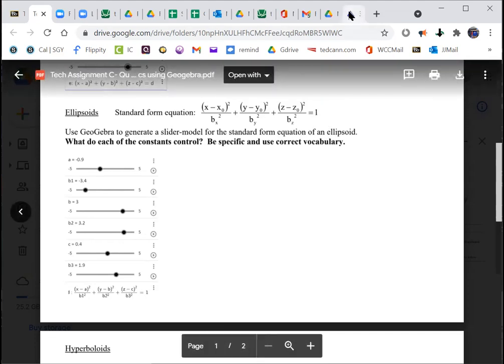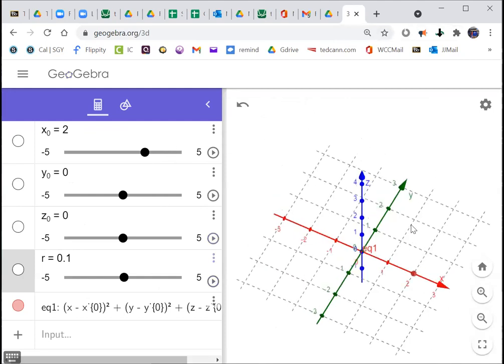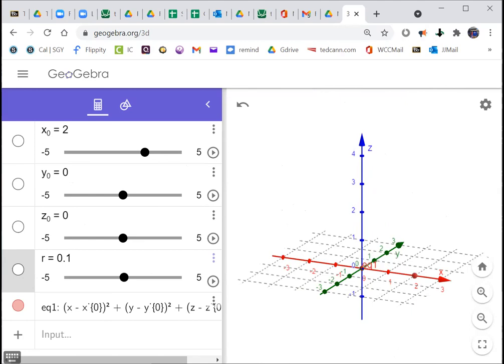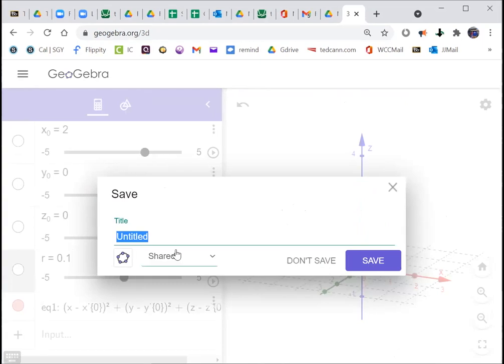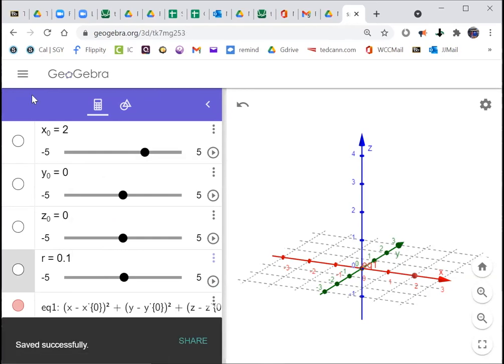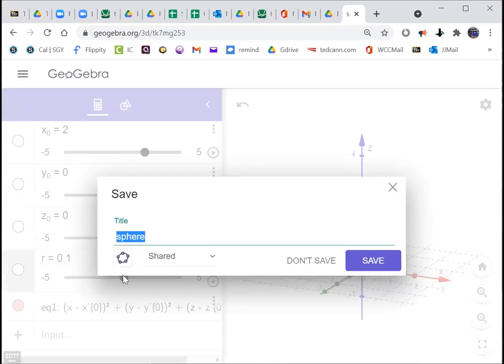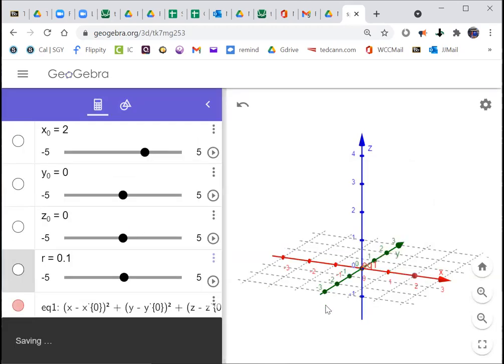Now the one thing you'd have to account for is what's the story with the negative r's? Negative r's also impact the radius of the sphere, so whether it's positive or negative it's still going to give you the radius of the sphere, and that needs to be in your explanation. Then you have the ellipsoid. If you're careful with the way you do it, you should be able to modify your sphere equation graph to account for an ellipsoid.